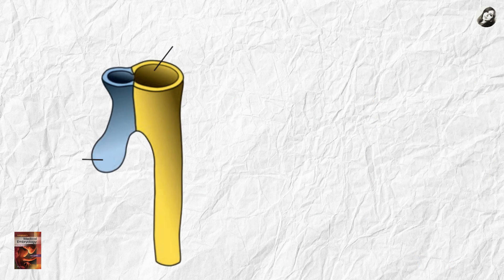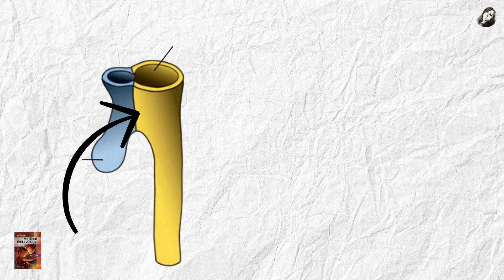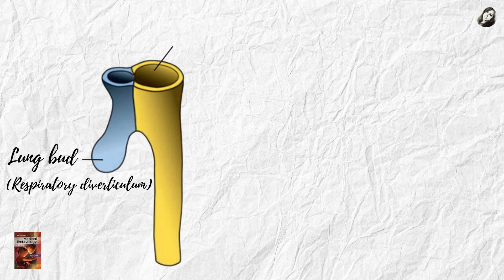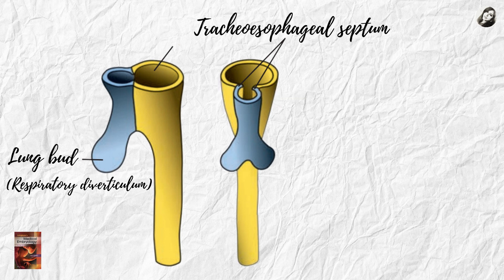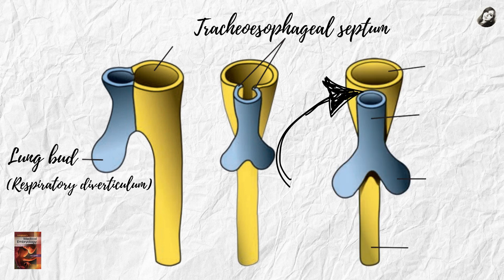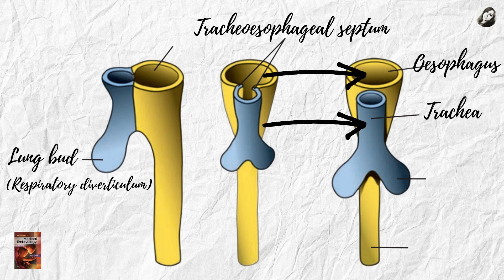This is the foregut at the level of the respiratory diverticulum — the ventral portion and the dorsal portion. From the ventral portion, a bud appears: the lung bud or respiratory diverticulum, from which your respiratory system will develop. The corners of this bud are the tracheoesophageal septum, which fuse with each other and separate the ventral portion — the future trachea — from the dorsal portion — the future esophagus.